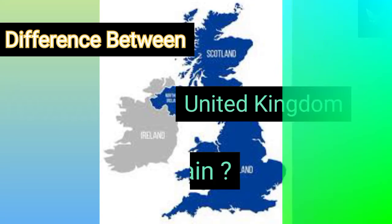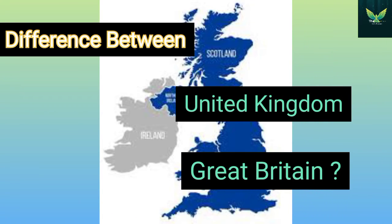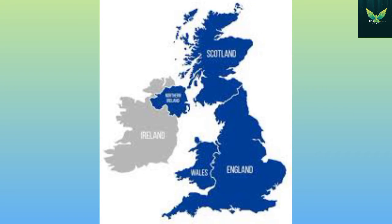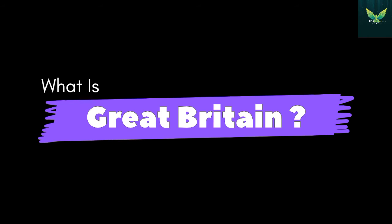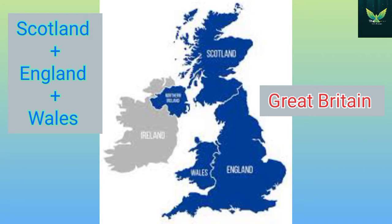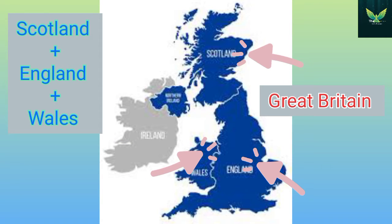In this video we are going to talk about the difference between United Kingdom, Britain, and Great Britain. Great Britain consists of three countries: Scotland, England, and Wales. In simplistic language, when you combine these three countries, we refer to it as Great Britain.